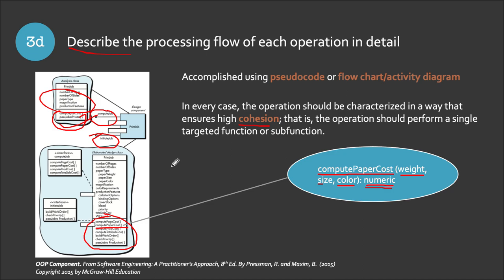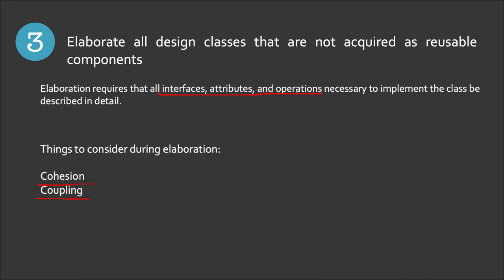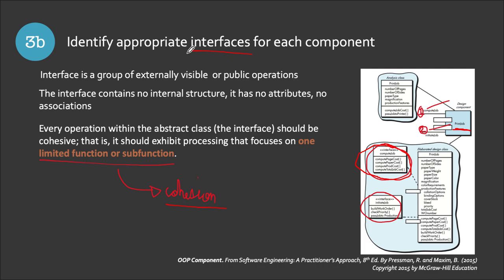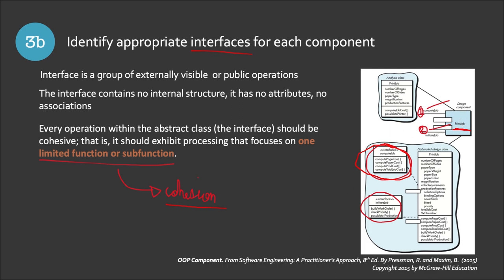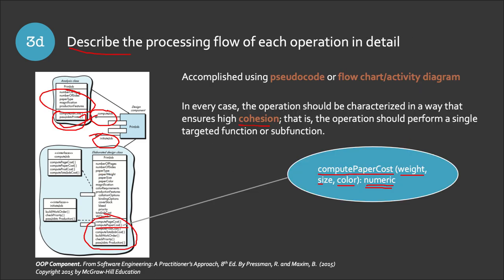To recap step 3: we are elaborating the classes, considering cohesion and coupling. In step 3A, we specify message details — you can incorporate your sequence diagrams here. In 3B, we identify and elaborate interfaces. In 3C, we elaborate the attributes and define data types and data structures for each. In 3D, we elaborate the operations.